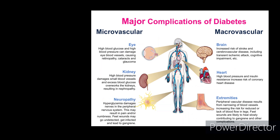Chronic complications are divided into microvascular and macrovascular categories. Microvascular complications include retinopathy affecting the retina of the eye, nephropathy affecting the kidneys, neuropathy affecting the nerves, and diabetic foot and dermopathy affecting the skin. Macrovascular complications affect the cerebrovascular system, the cardiovascular system including the heart, the brain, and the peripheral vascular system. To summarize, the major complications of diabetes are divided into microvascular — affecting the eye, kidney, and nerves — and macrovascular — affecting the brain, heart, and extremities.